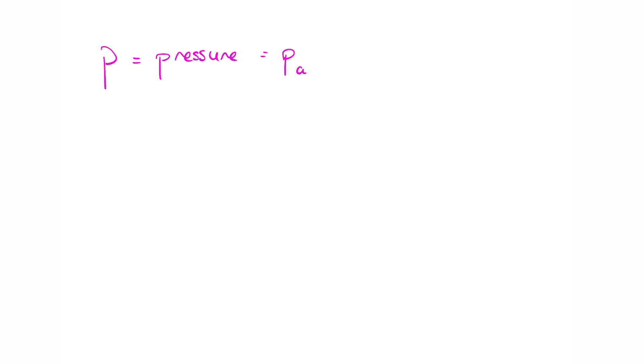All of the quantities in question in the ideal gas equation have their own units. Pressure is in pascals. Volume is in meters cubed. Moles is in moles. R is just the number 8.31, and you are given this in the exam. Temperature is measured in Kelvin.